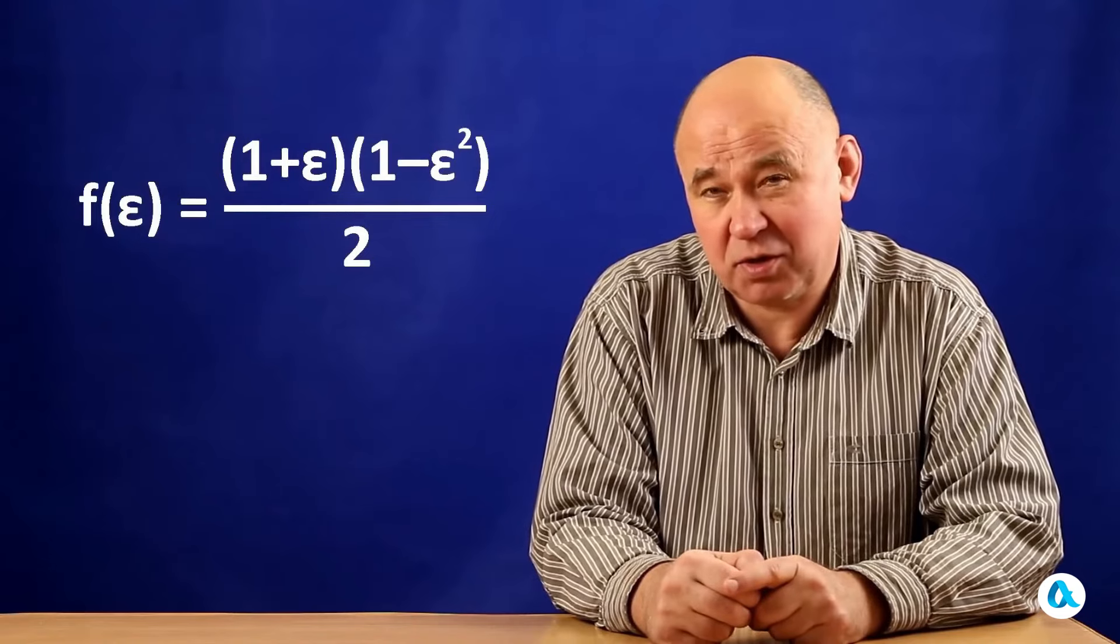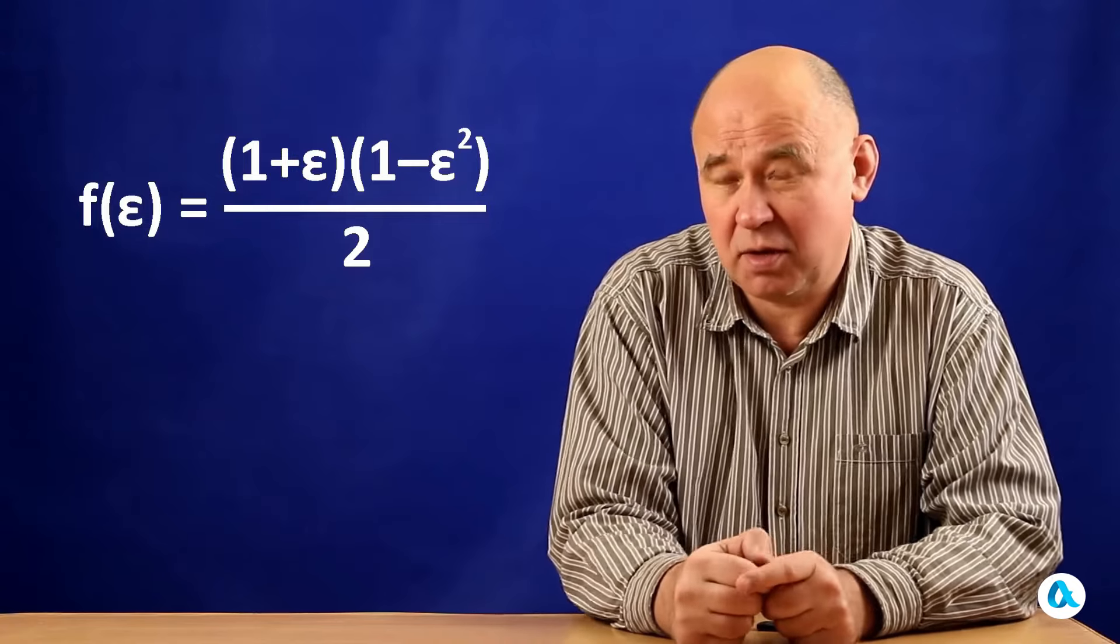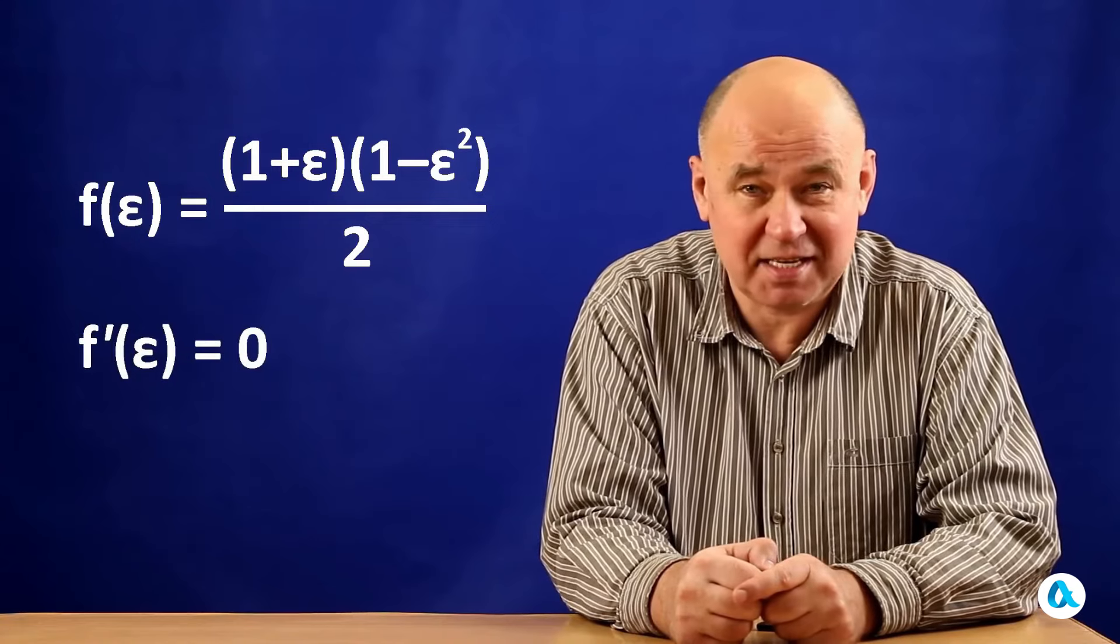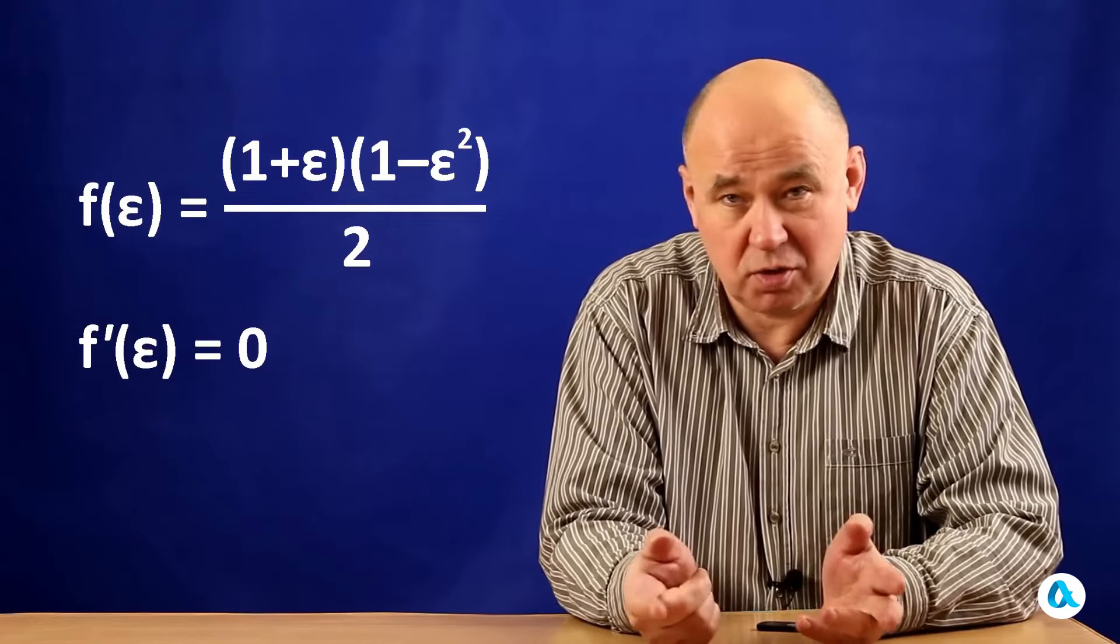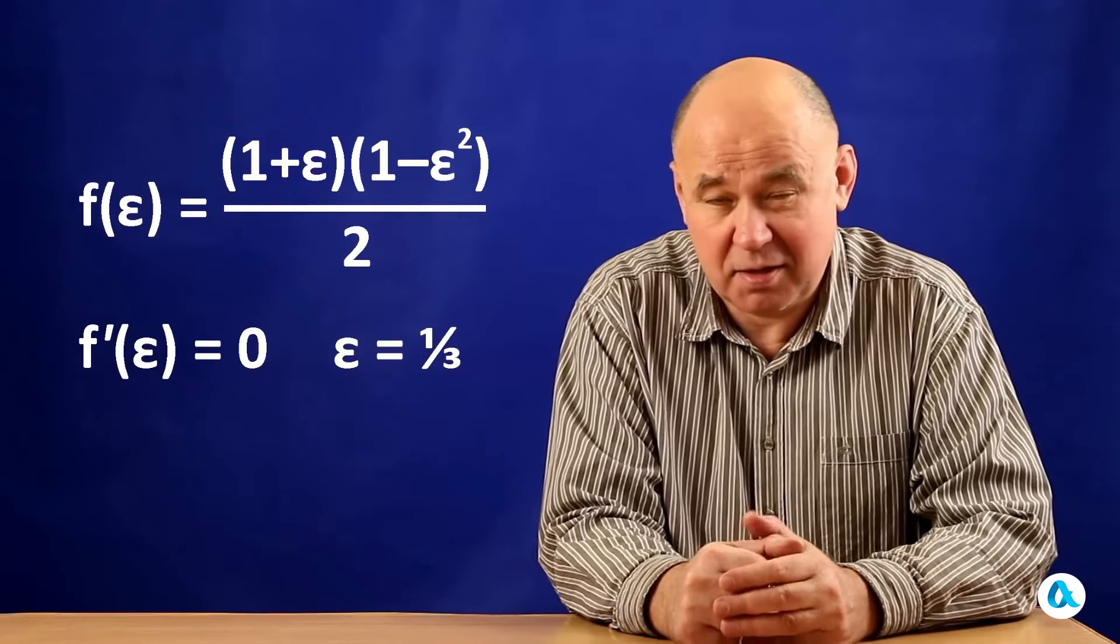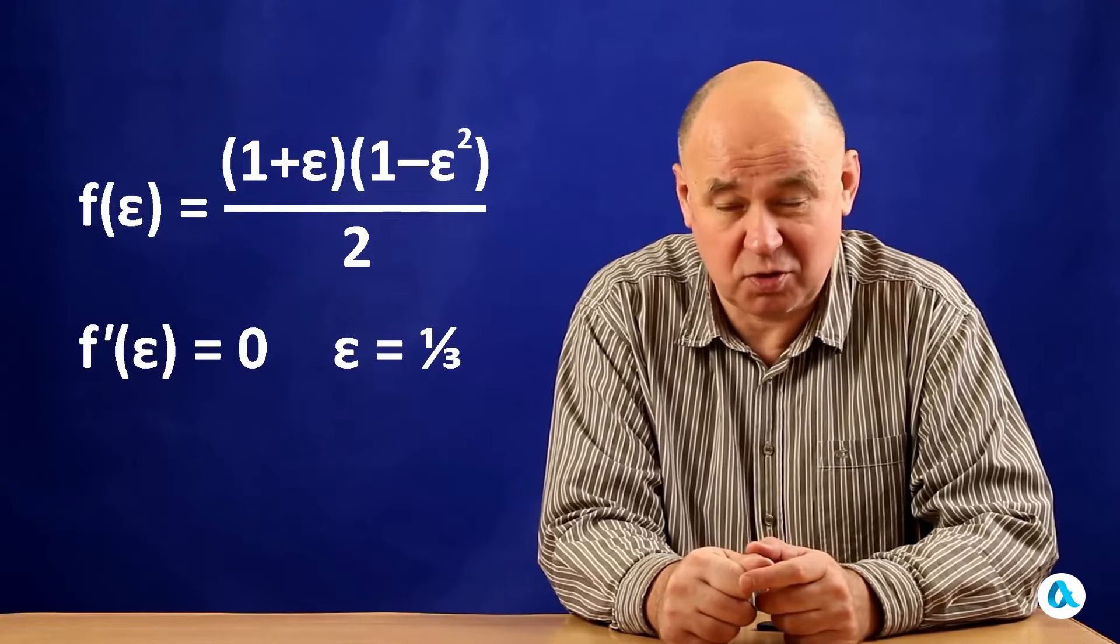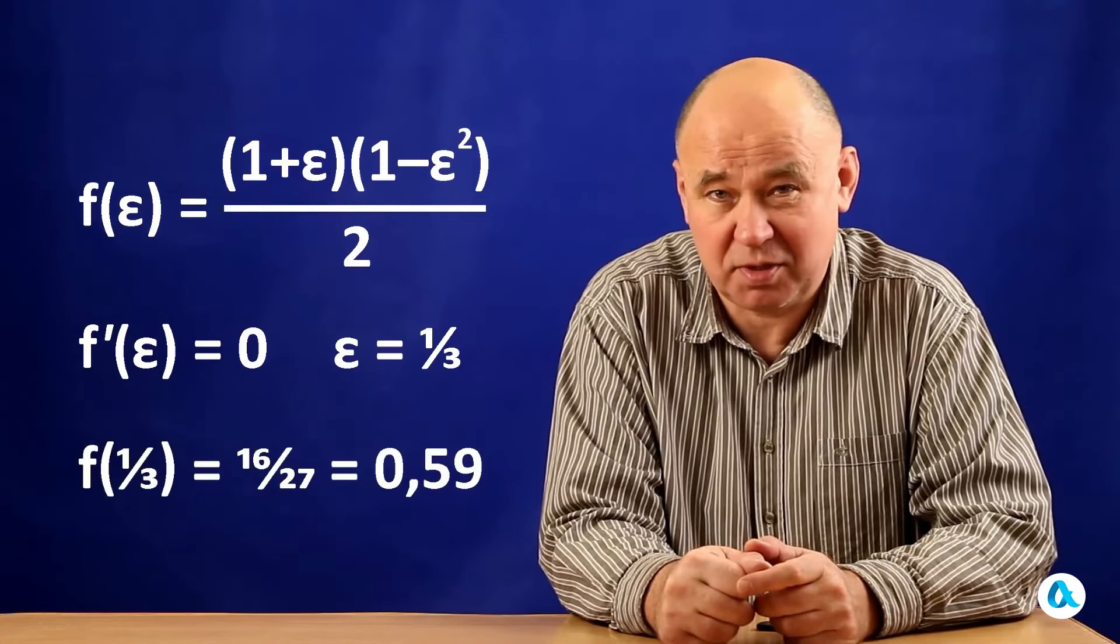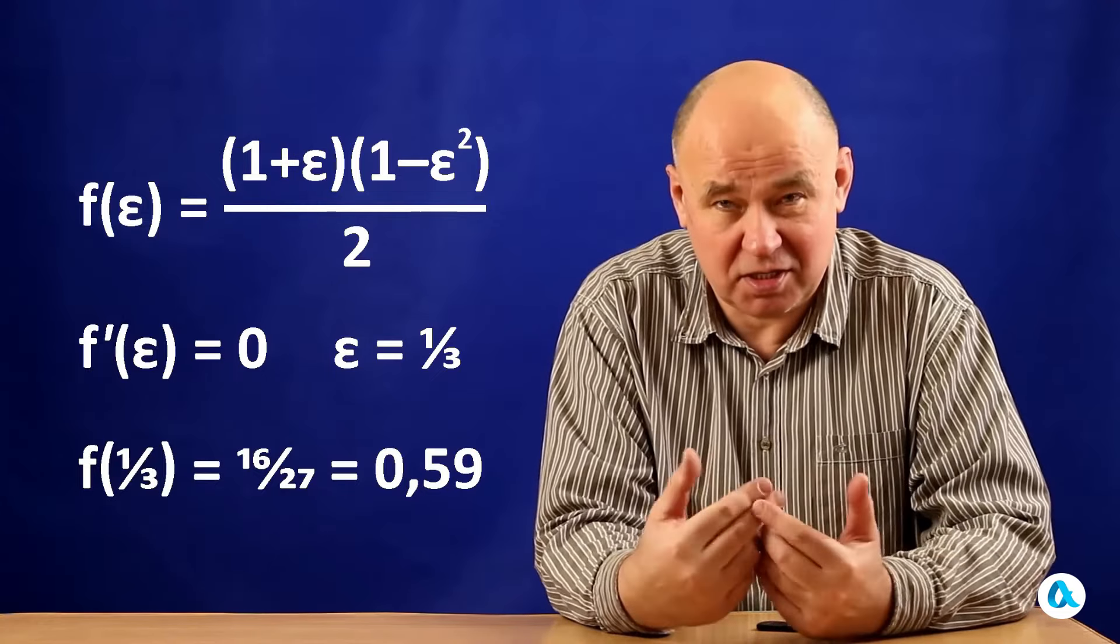Here is our function, which shows the dependence on the speed ratio from epsilon. Conversion coefficient. We need to find at what value of epsilon it reaches its maximum. So we differentiate it, set the derivative to 0, this is a simple exercise, we get a quadratic equation, I won't write it out, solve it, and find that the derivative is 0 when epsilon is equal to 1 third. That is, the output speed is approximately 3 times less than the input speed. Substituting this 1 third into our function f, we find that it takes the value of 16 27ths. For technical purposes, it is more natural to convert all this into decimal fractions. Approximately 0.59.